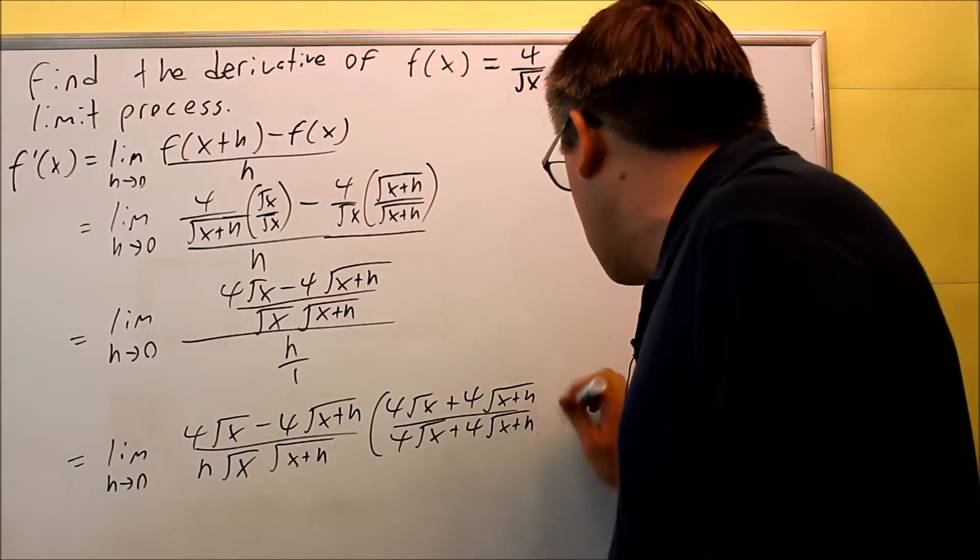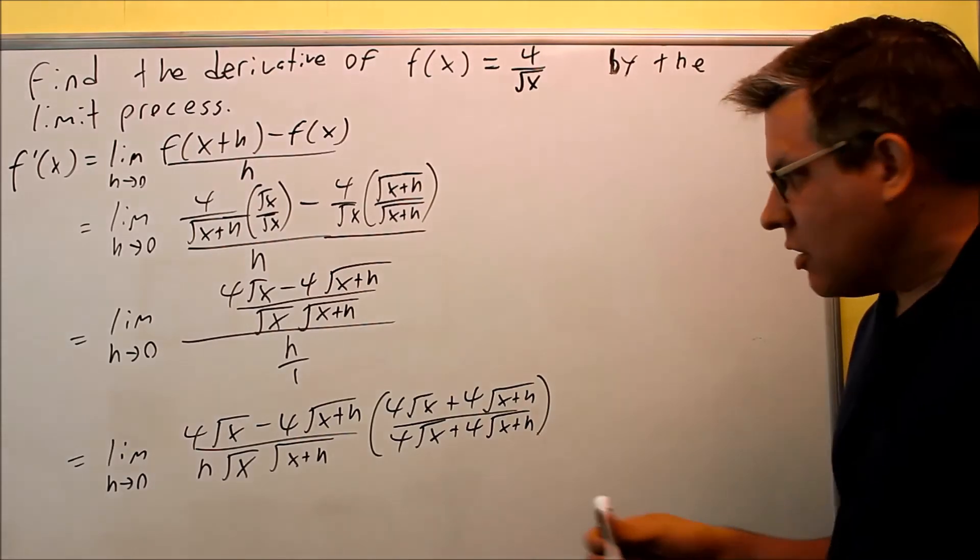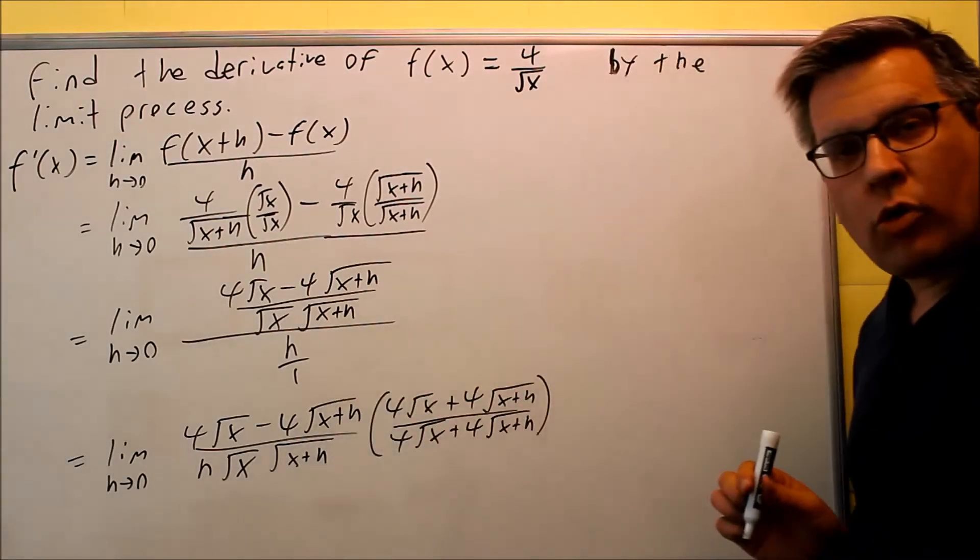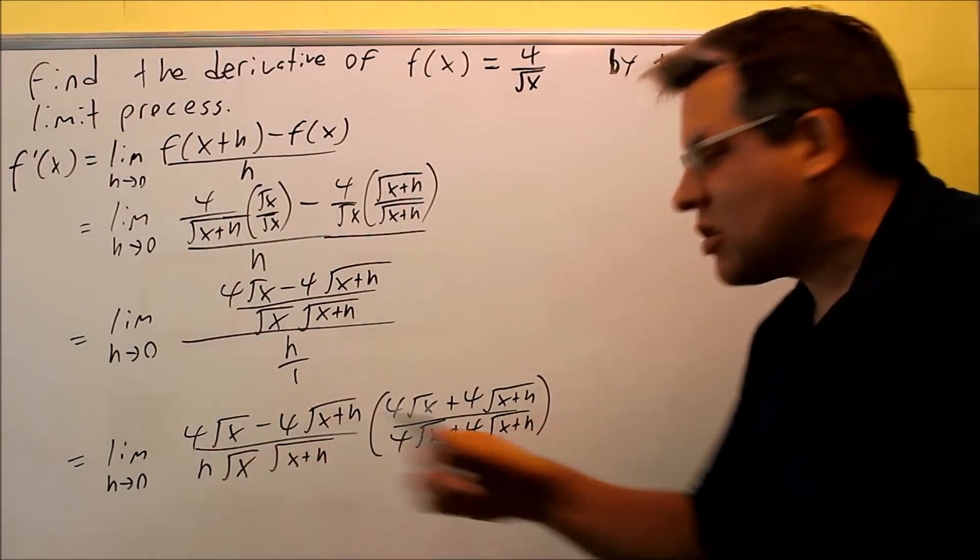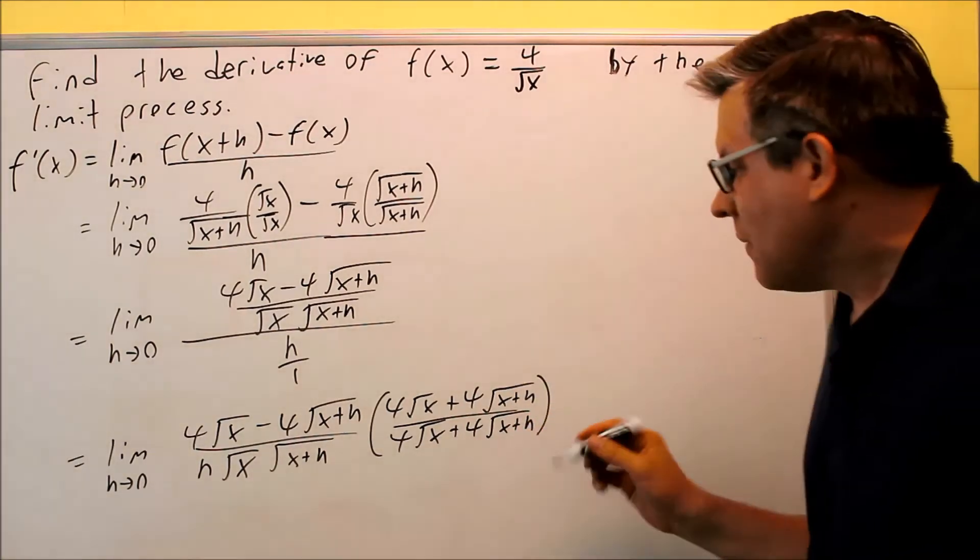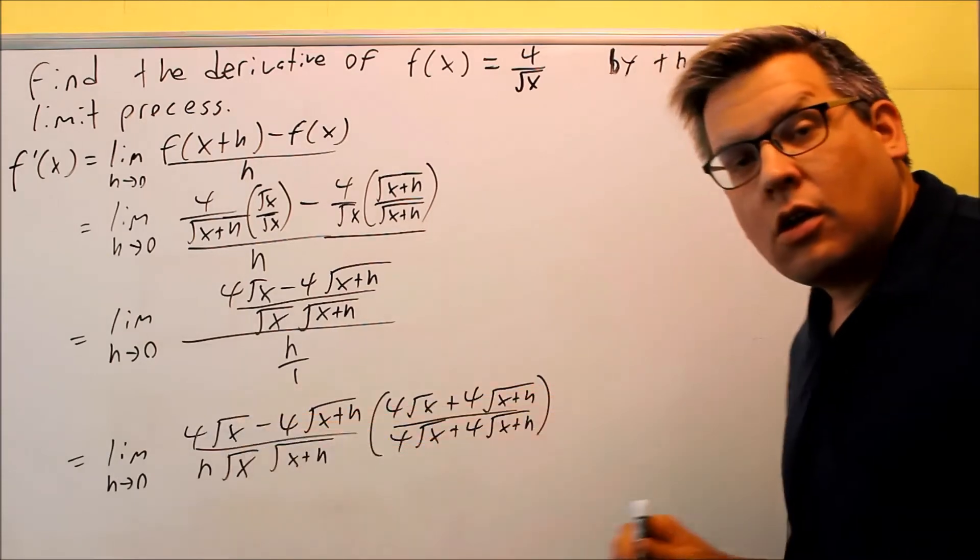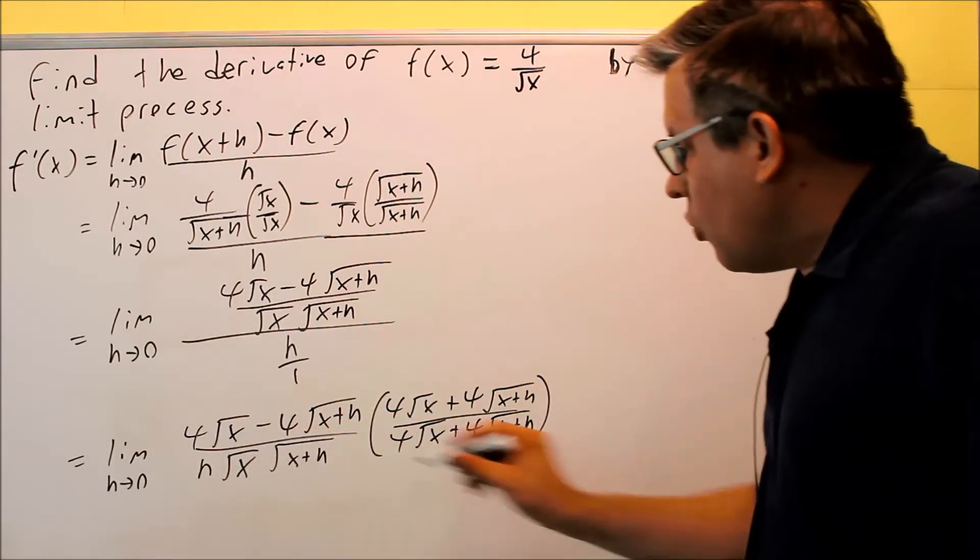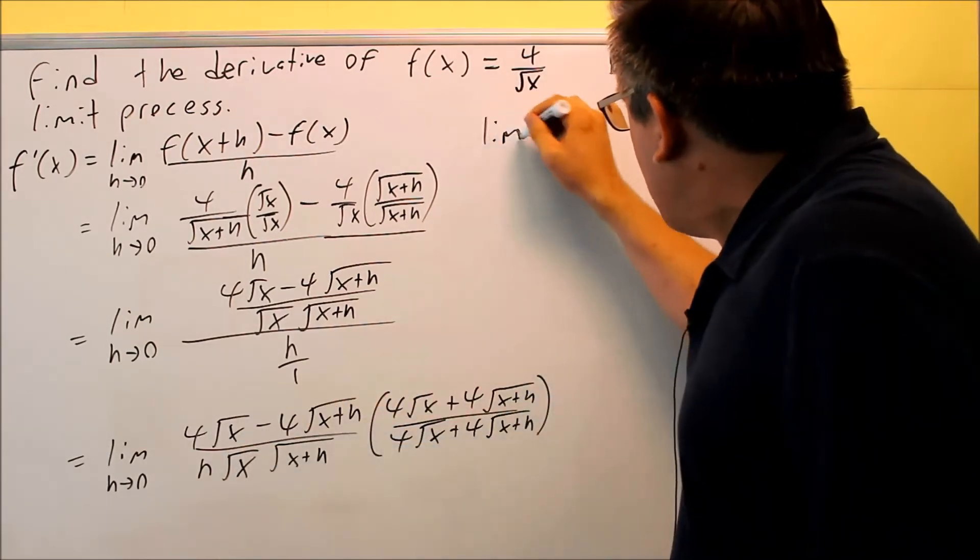We're doing that because then we'll be able to cancel out the square roots and hopefully we'll be able to eventually cancel the h out of the bottom so we can get the answer. So anytime you have problems with square roots, you've got to do this process with the conjugate when you're finding limits. Let's multiply this out, so we'll bring that up here.